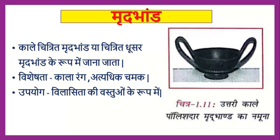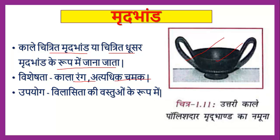Let's talk about the third thing about Maurya Kaal — Mridband (pottery). The pottery of Maurya Kaal, also known as the Northern Black Polished Ware, had a distinctive color — red and also a blue-black shade. It is also known as Chitra-Dhusar-Mridband.